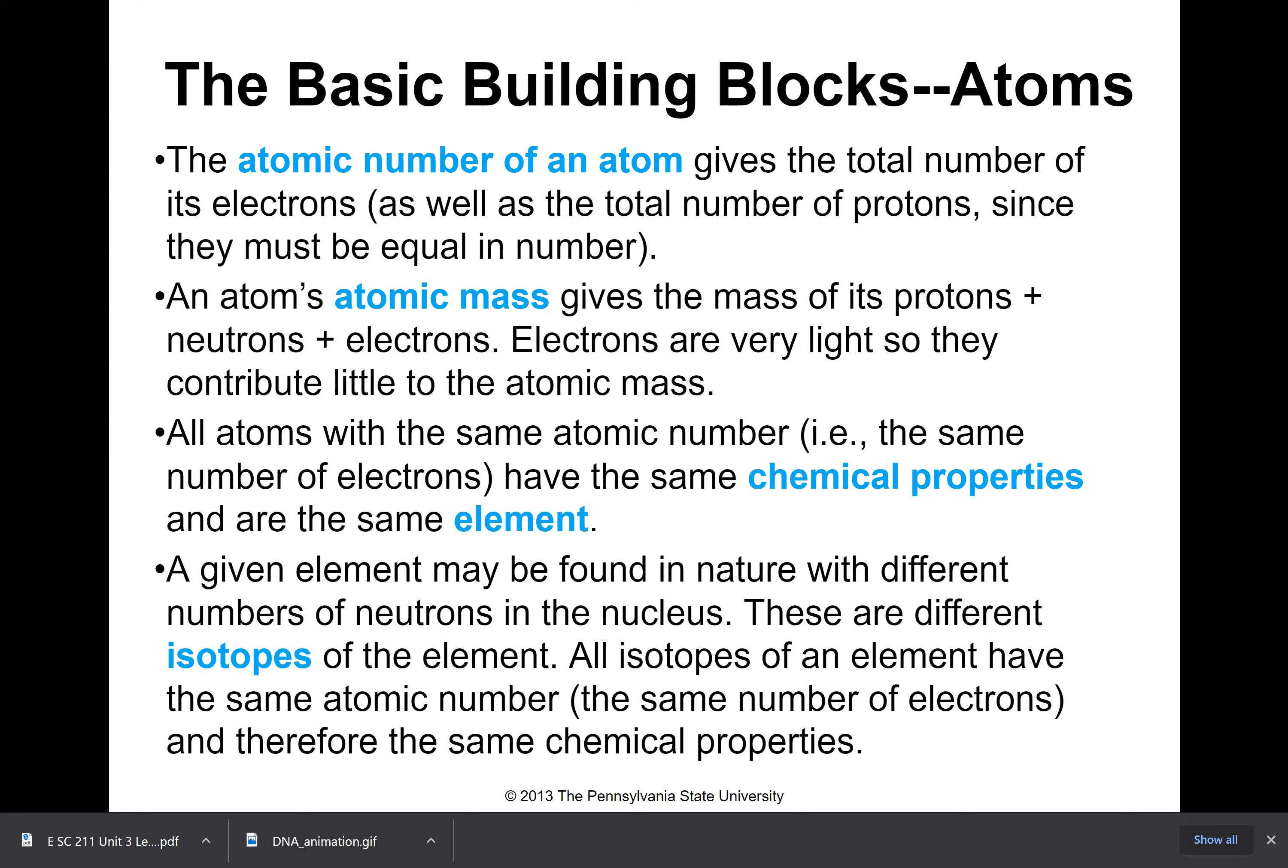A given element may be found in nature with different numbers of neutrons though in the nucleus. These are different isotopes of the element. All isotopes of an element have the same atomic number, which is the same number of protons or electrons, and therefore the same chemical properties.